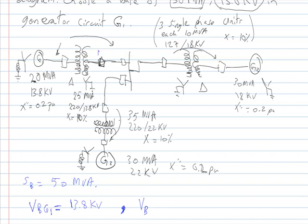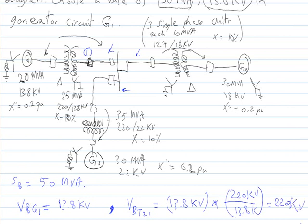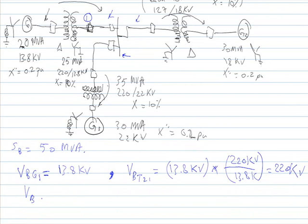For transmission line number one, the base voltage is 13.8 kV — which is the base value on the generator number one bus — multiplied by the secondary of transformer number one, which is 220 kV, over the primary of transformer number one, which is 13.8 kV. Therefore, the base voltage on transmission line number one is 220 kV.